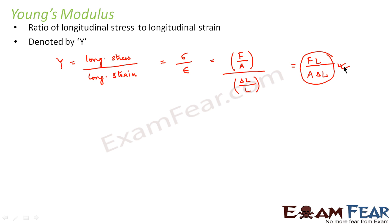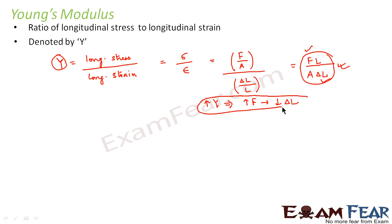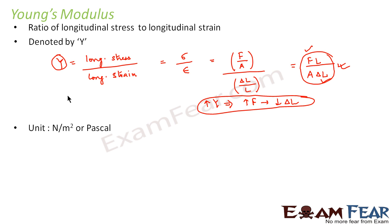Greater Young's modulus means a larger force is required to produce a small change in length. The unit of Young's modulus is Newton per meter square, or Pascal. This is because strain has no unit — it is the ratio of two lengths — while longitudinal stress is force per unit area, giving units of Newton per meter square or Pascal.